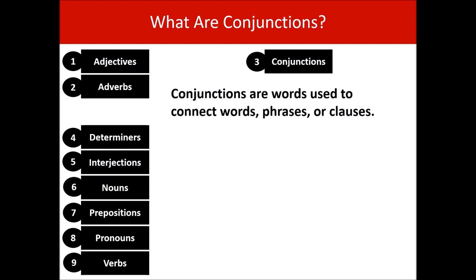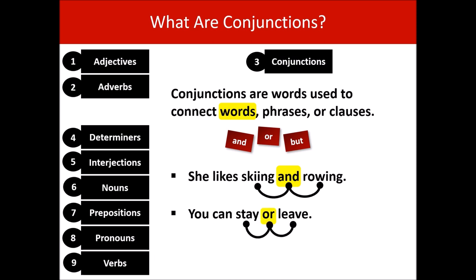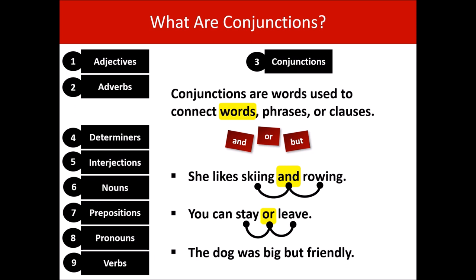Here are three common conjunctions: and, or, and but. She likes skiing and rowing — 'and' connects the words skiing and rowing. You can stay or leave — 'or' connects stay and leave. The dog was big but friendly — 'but' connects big and friendly.